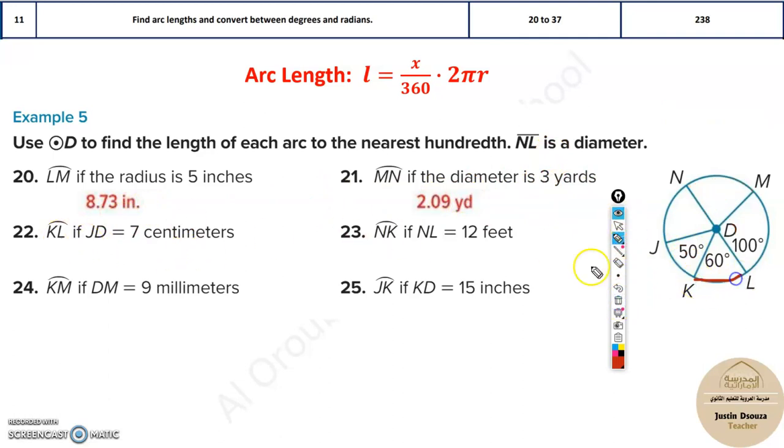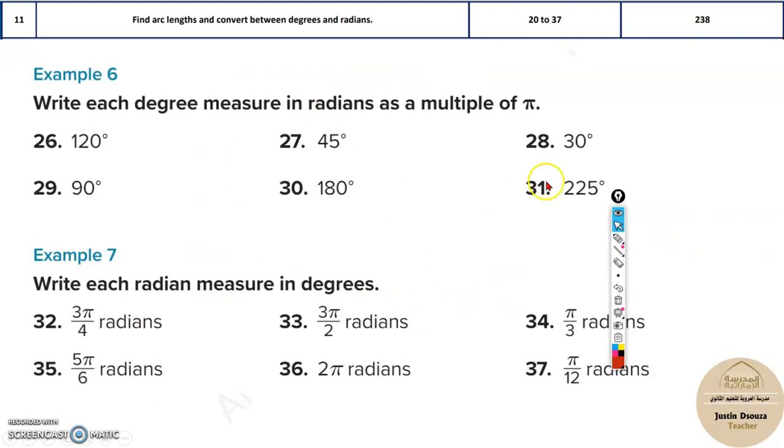Now KL over here is given, and they have given JD to be 7. Now this is a radius, so even this will be the same thing, 7. And you can simply solve these problems. Solve all of this and just check the answers. Now we will do a degree conversion.